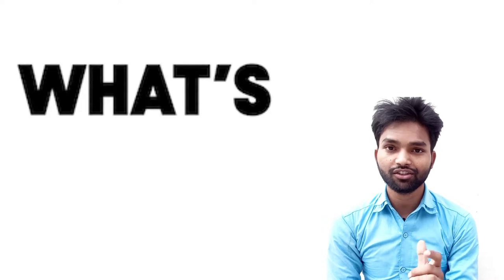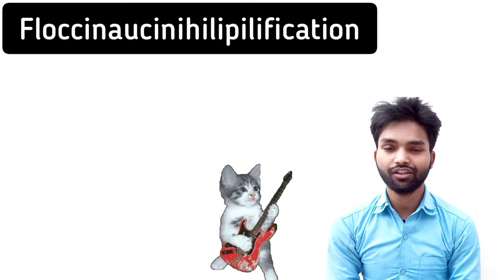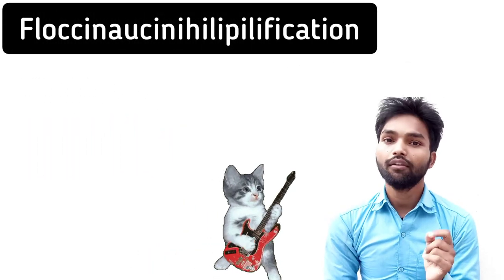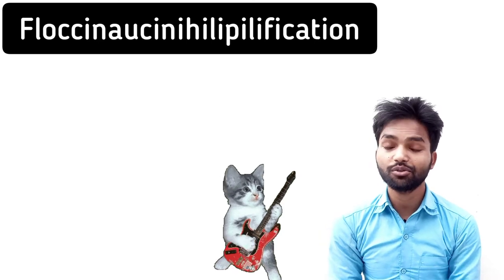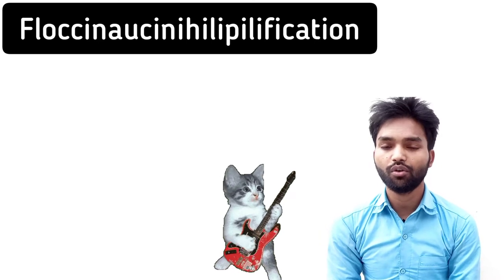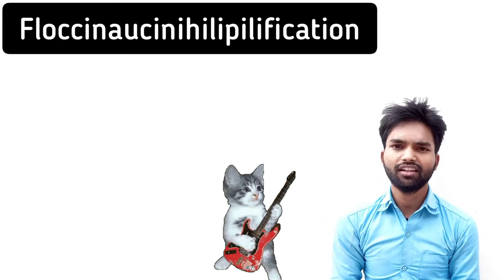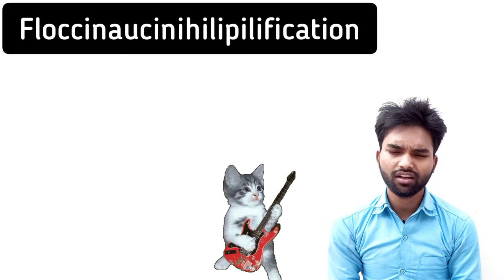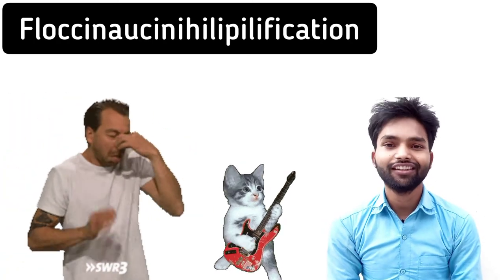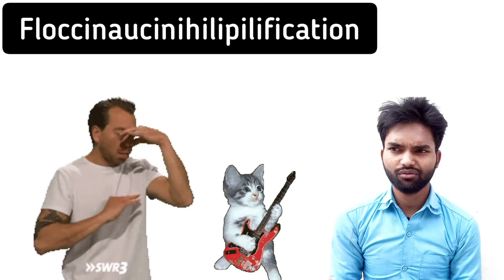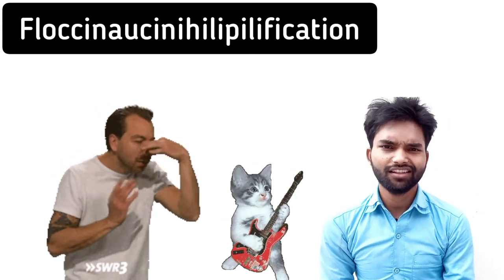Now, the next one is called Floccinaucinihilipilification. This is also one of the longest words of the English language. It means we can say useless, worthless — the quality of considering something to be worthless or trivial, okay?